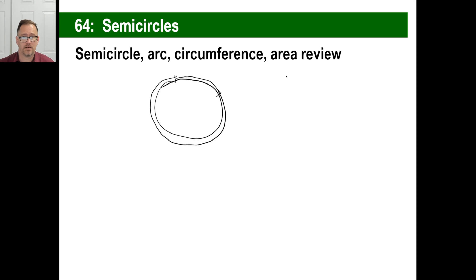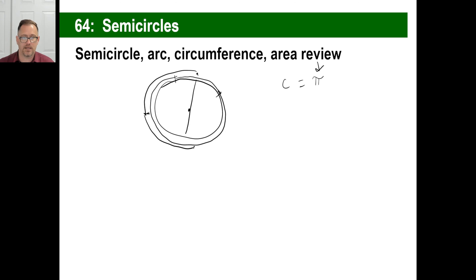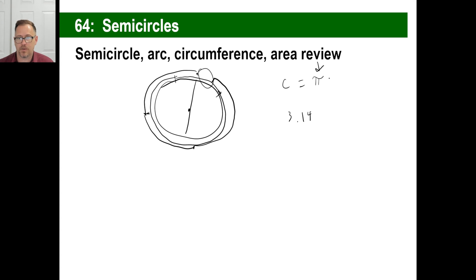What is the formula for circumference? Circumference equals what times what? It's pi times the diameter. Pi is about 3.14. That means if you take a diameter and wrap it around the circle, it goes around three times with a little left over — 3.14. That is the number of times a diameter goes around the circle it's on. So make sure you know it's pi times diameter.